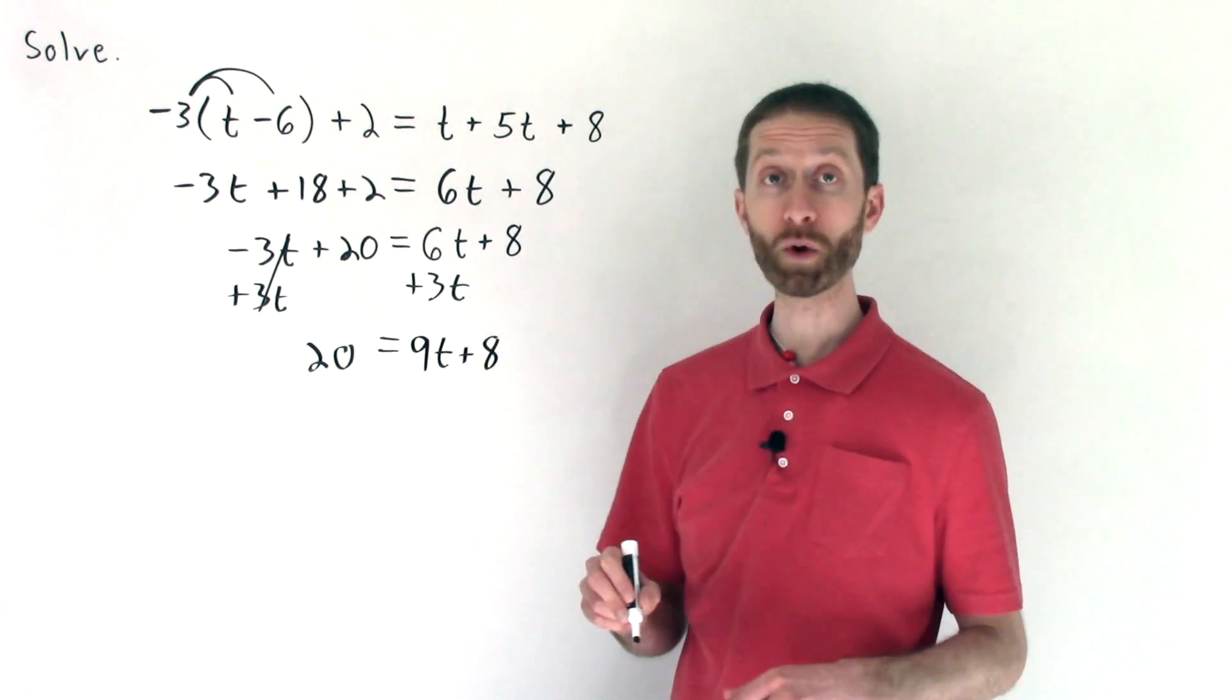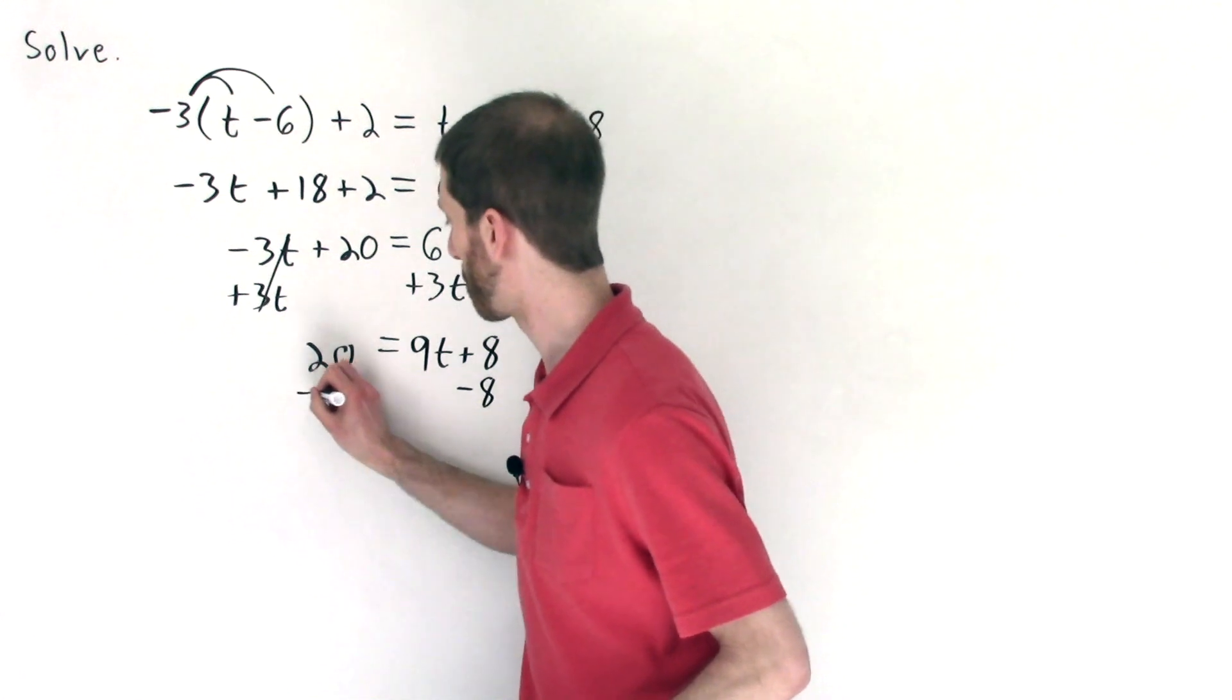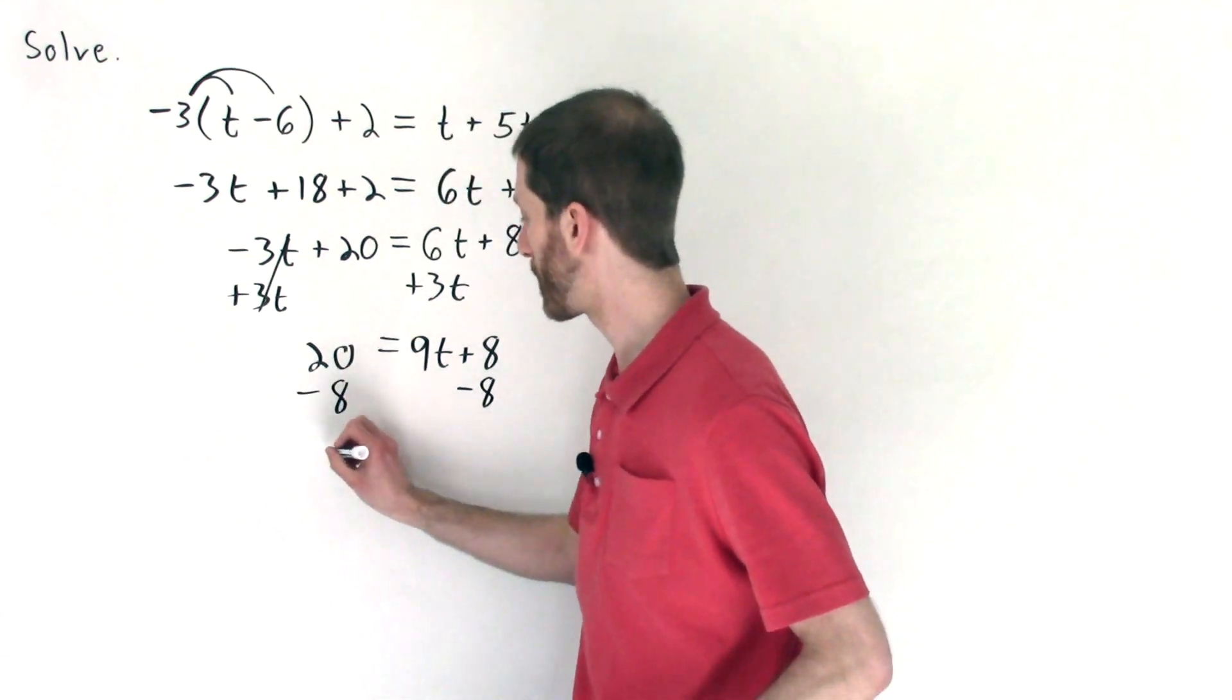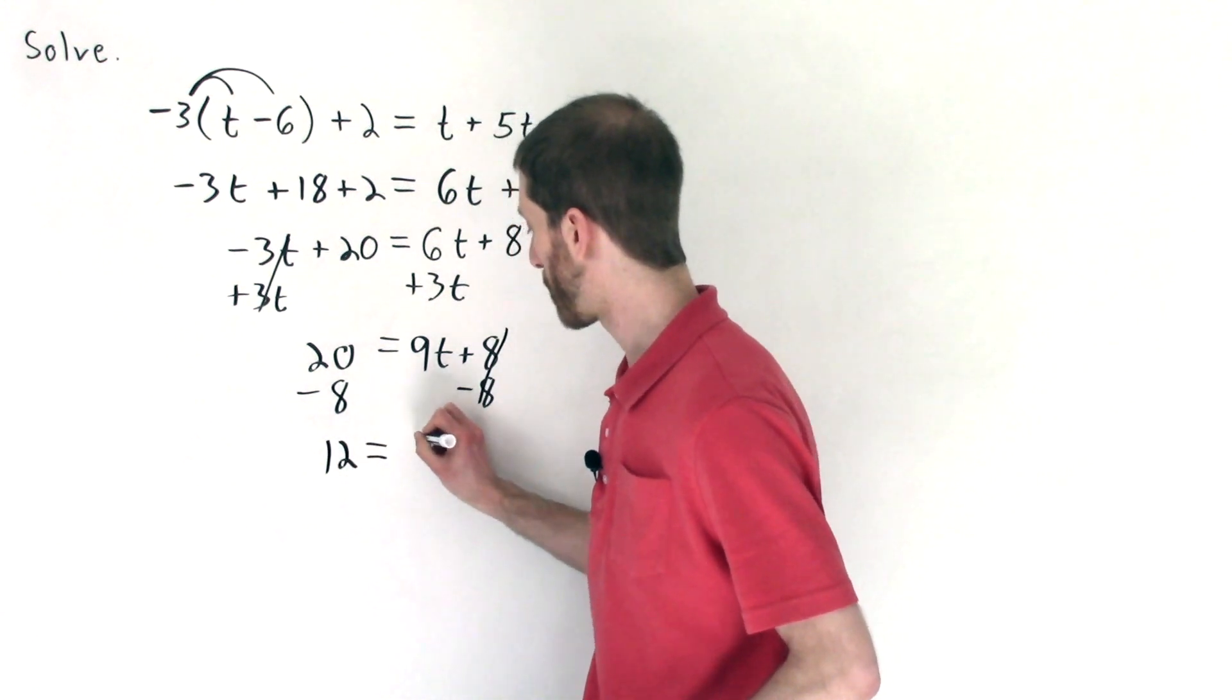Now we're left with a two-step equation. I'll undo plus 8 by subtracting 8 on both sides. 20 minus 8 is 12. The 8's have cancelled. 12 equals 9t.